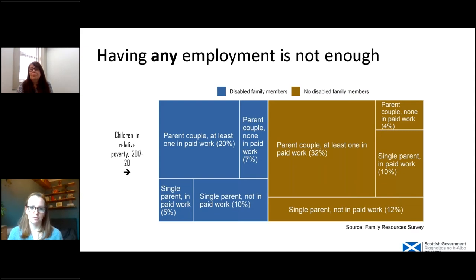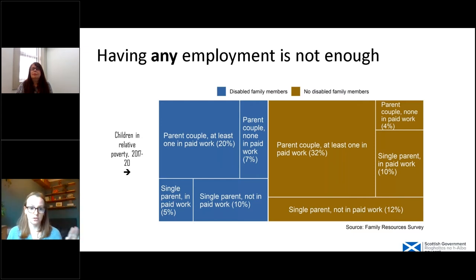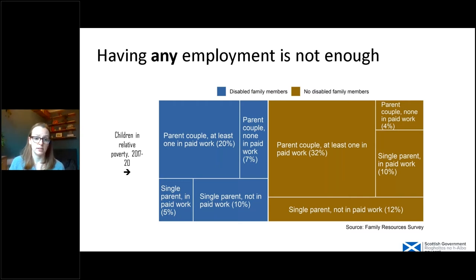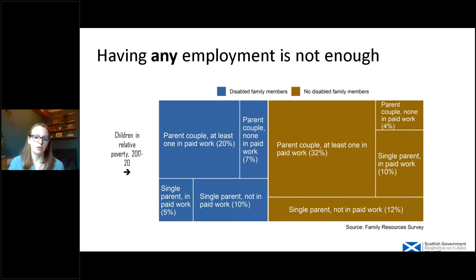This chart represents all children in relative poverty in Scotland. Those in blue are children in a family where there's a disabled person. Looking at the two boxes on the far left — couple parent with at least one in paid work, and single parent in paid work — these represent children from disabled families where at least one adult is in employment. This really shows that having any employment is not enough to stop families from falling into relative poverty. Around three-fifths of children in relative poverty in these families do have someone in employment, so it's not enough to find any employment — people must have work where they are earning enough per hour and have enough hours to work.